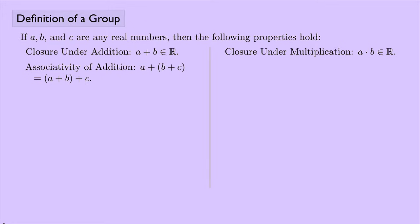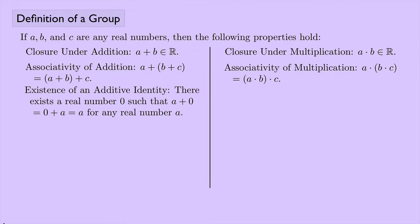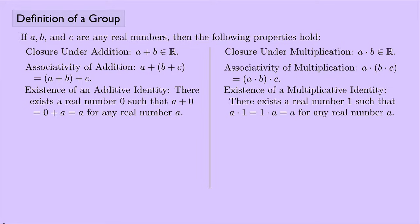Associativity of addition says that you can move the parentheses around when you add, and we have the analogous property for multiplication. The existence of an additive identity says there's a real number, we'll call it 0, such that A plus 0 equals 0 plus A equals A for any real number A. We also have a multiplicative identity, and that's the real number 1.